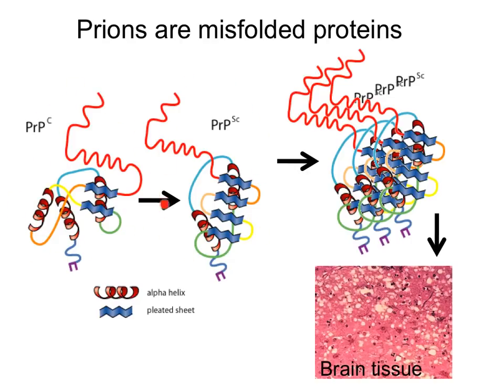The natural protein has this way of folding, and then you have what is called the prion, and that is the misfolded version of the same protein. So the same amino acid sequence — meaning nothing in the genes has changed for this protein. It's just that once this normally folded protein gets in contact with the prion, the prion version, it will misfold, and it will turn into a prion itself.